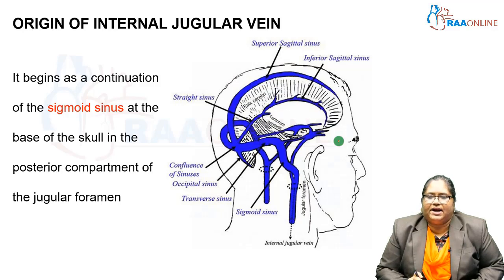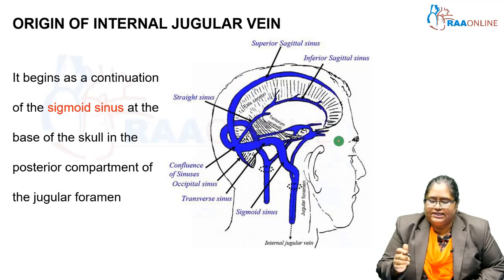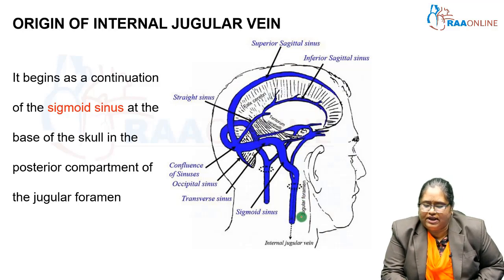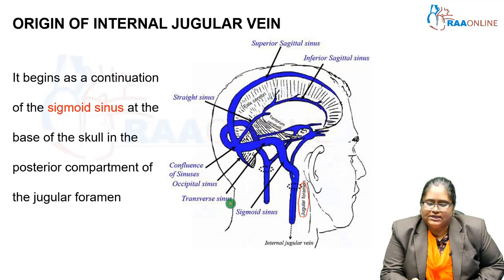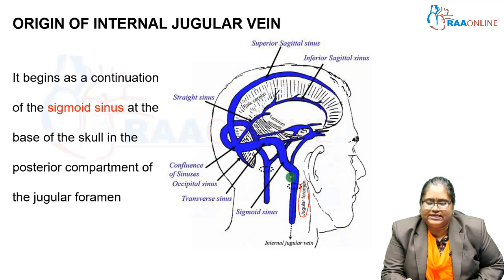The origin of the internal jugular vein is in the posterior compartment of the jugular foramen. Looking at this picture, you can see the jugular foramen and the sigmoid sinus, and the internal jugular vein begins as a continuation of the sigmoid sinus at the base of the skull in the posterior compartment of the jugular foramen.